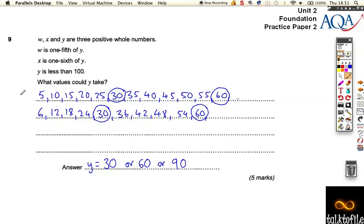That's because you've got to divide y by five, so it's going to be in the five times table. Y is also going to be in the six times table, and we need to find the numbers that are in both of them, because you've got to be able to divide by five and six and still get a whole number.